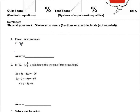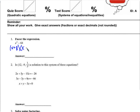All right, let's go through this together. First, we want to factor x squared minus 64. You may recognize it as a difference of squares, and the difference of squares factors as the square root of the first plus the square root of the second, times the square root of the first minus the square root of the second.